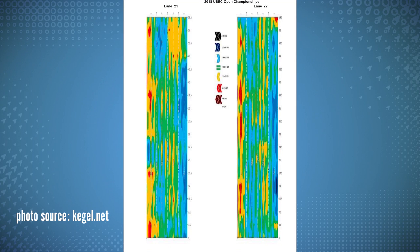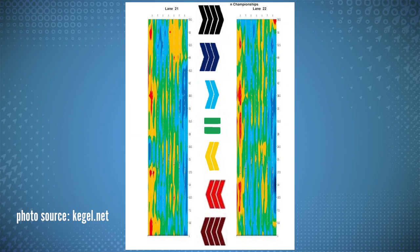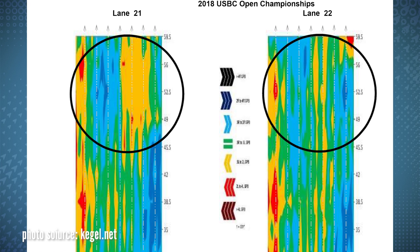This is the topography map from lanes 21 and 22 in Syracuse in 2018. I had the pleasure of playing on this pair during singles and doubles. I was not privy to this information before I bowled on this pair. Looking at the map scale, you can see that the green is neutral. Yellow and orange slope to the left, with blue shades sloping to the right. The darker the shade, the more the tilt in that direction. I did notice that lane 21 moved in the back end more than 22, and you can clearly see why in the slope differences in this image.